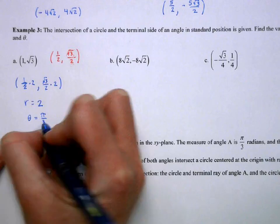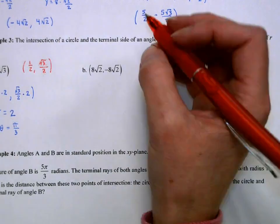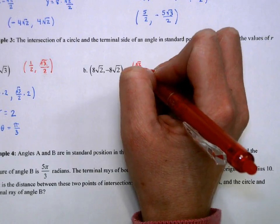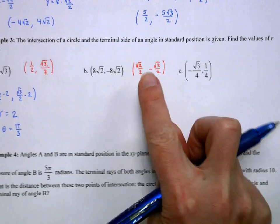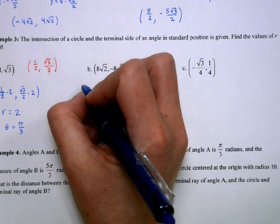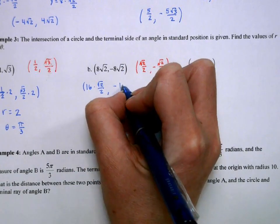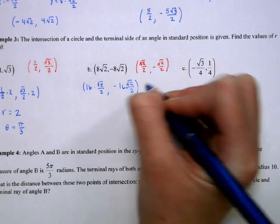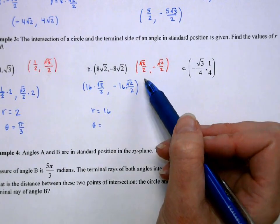If root-2s are involved, we're at a π/4 angle. A positive x and negative y means the fourth quadrant. The corresponding unit circle point is (√2/2, −√2/2). To get a numerator of 8 from √2/2, we multiply by 16. So r = 16 and θ = 7π/4.